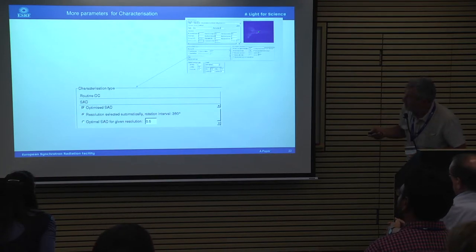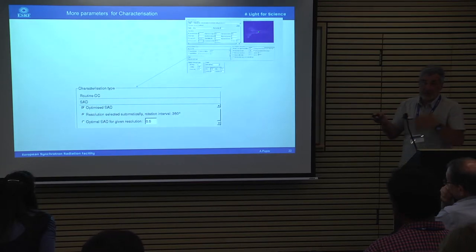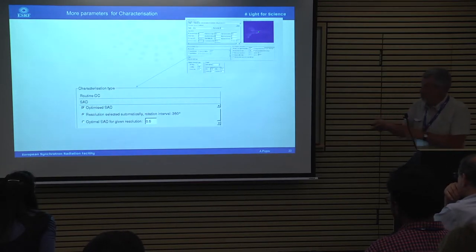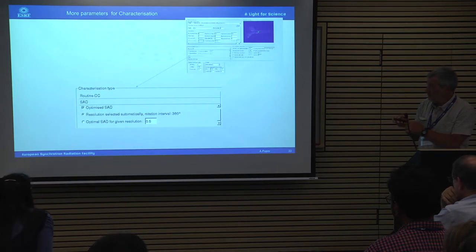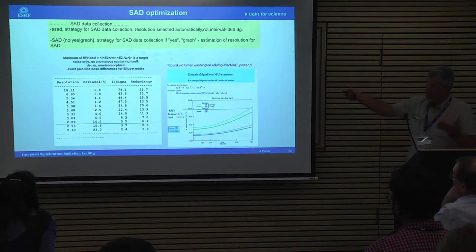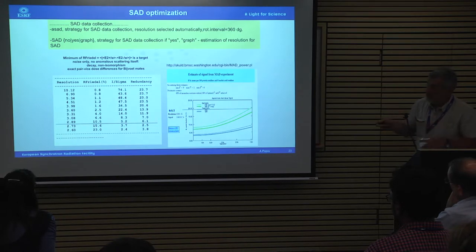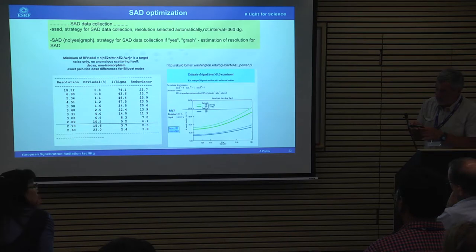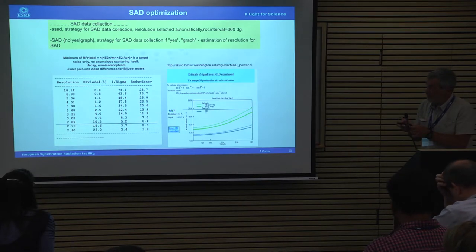There is also an option if you would like to collect SAD data — to measure anomalous differences, you should specify that you want to optimize for SAD data. The optimization target for normal data collection is reaching the highest possible resolution, whereas optimizing for SAD data requires a different strategy.